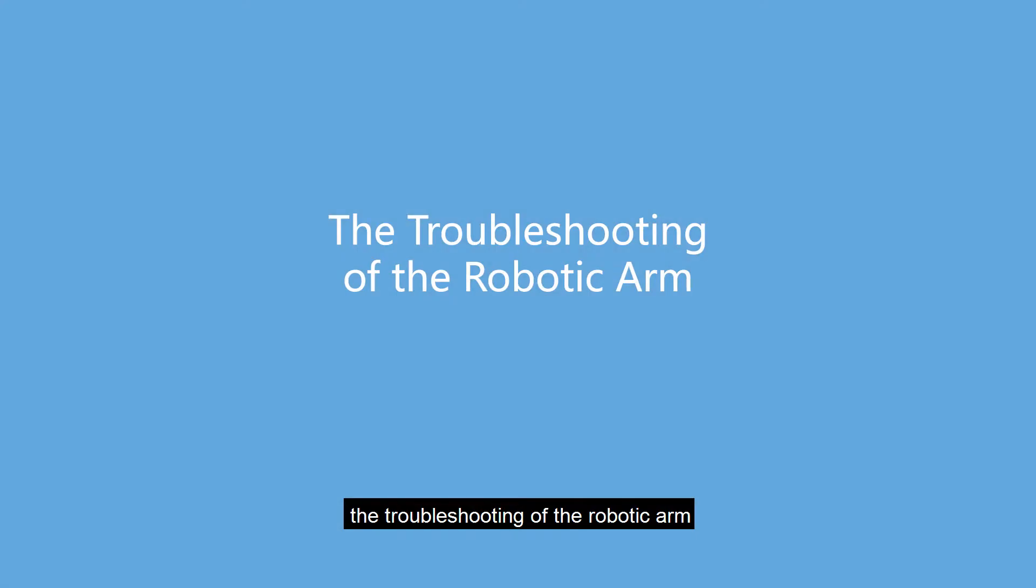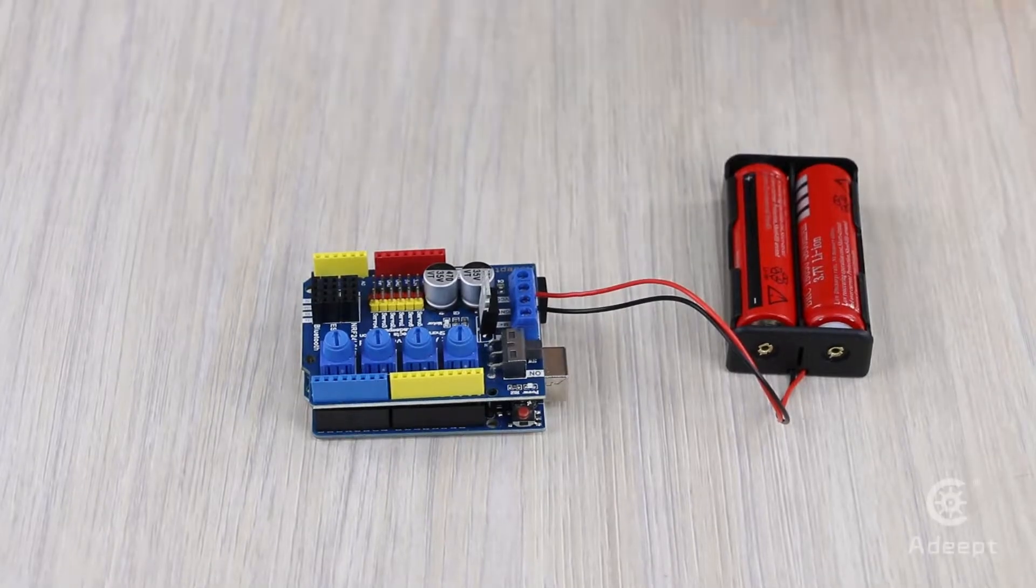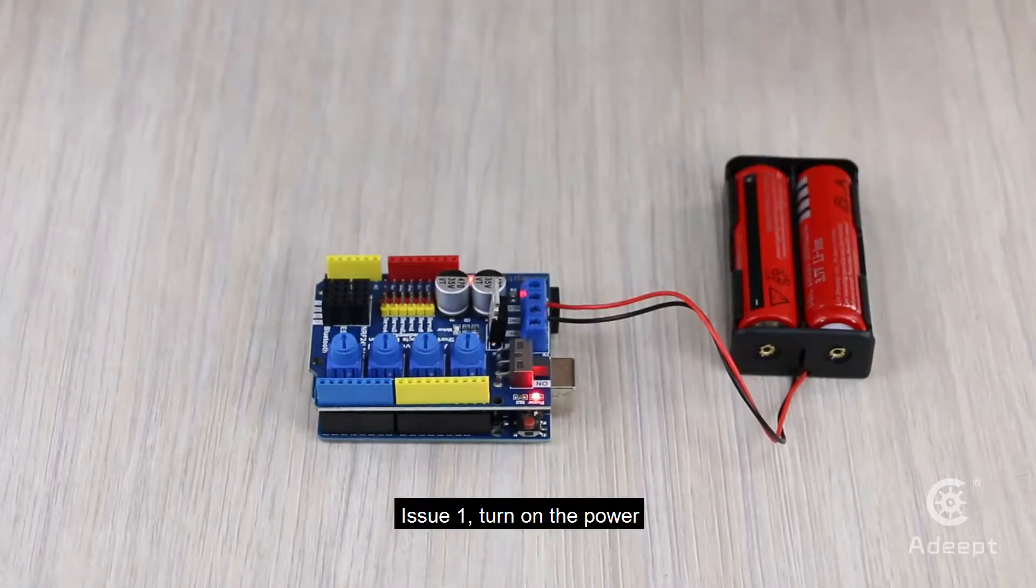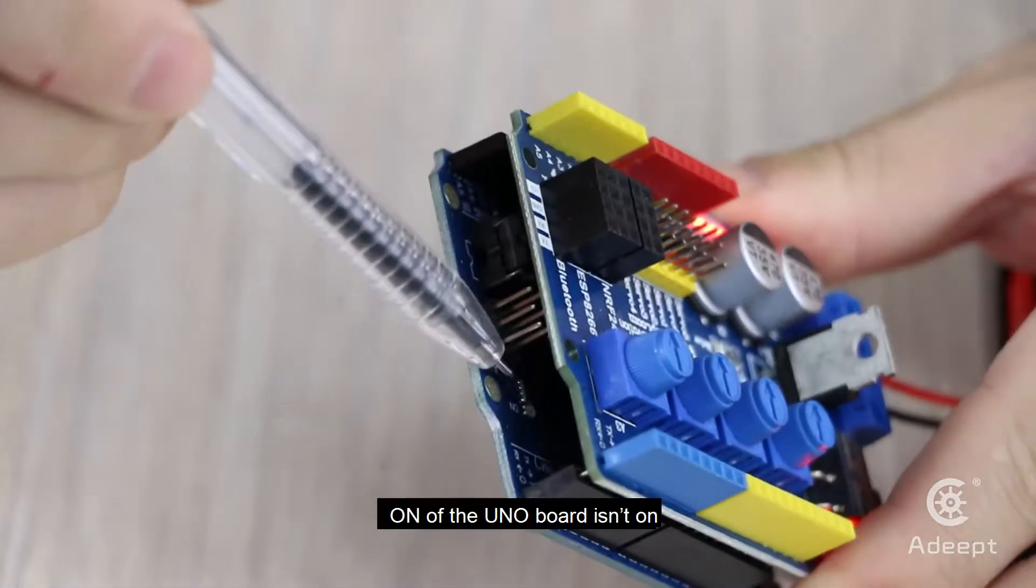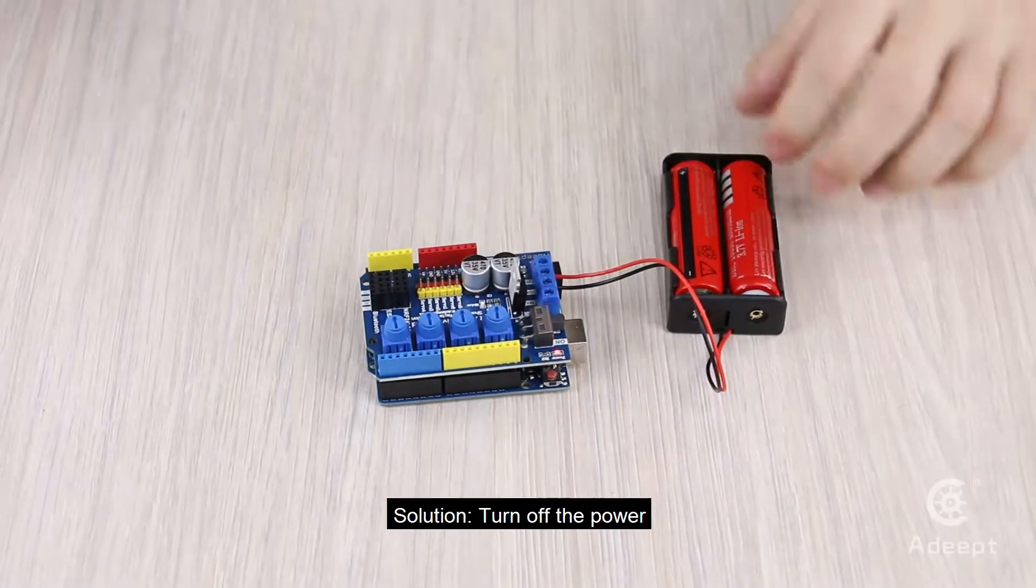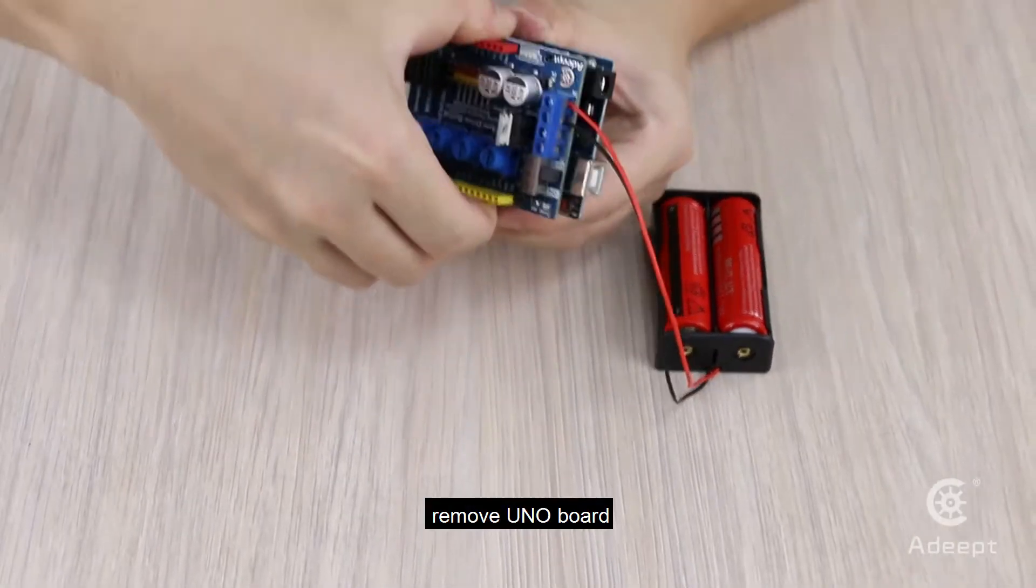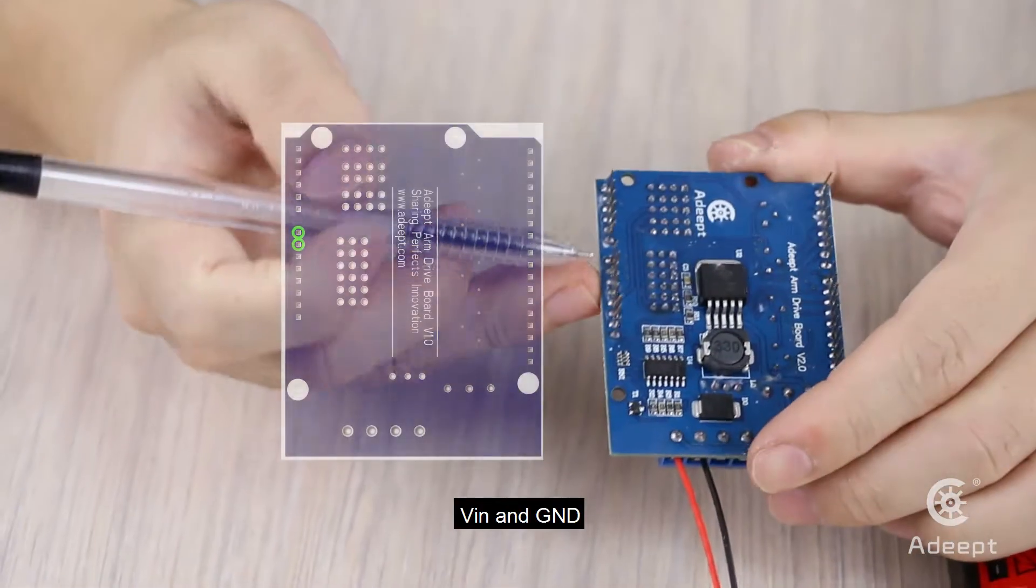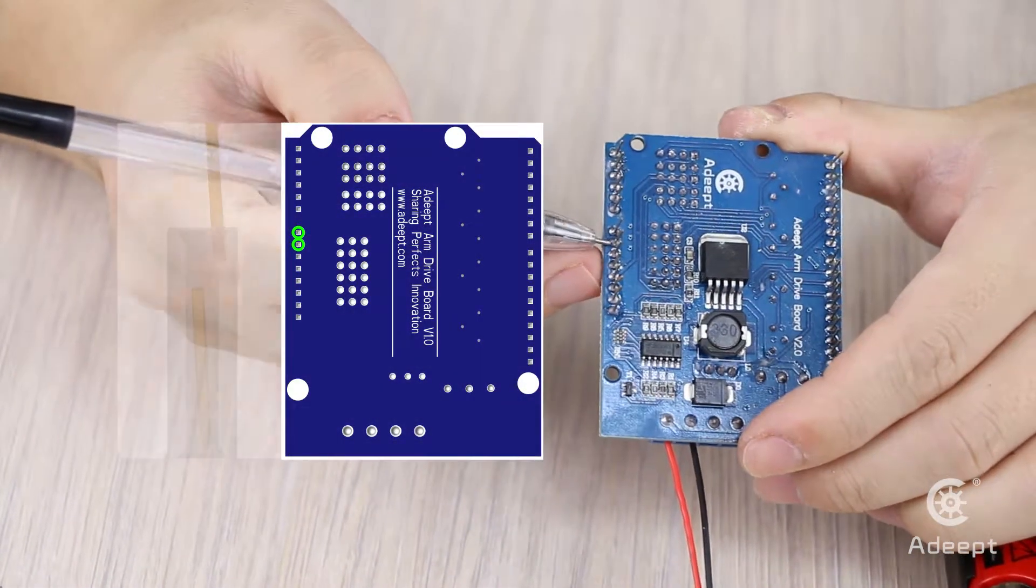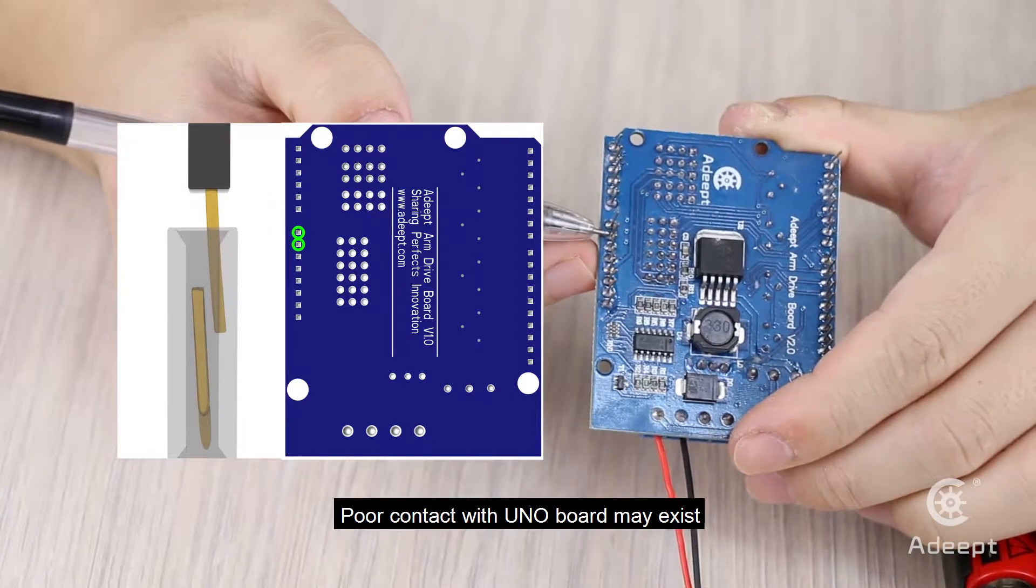This covers troubleshooting of the robotic arm. Issue 1: Turn on the power, the arm of the UNO board is not working. Solution: Turn off the power and remove the UNO board. Notice these two pins, VIN and GND - poor contact with the UNO board may exist.